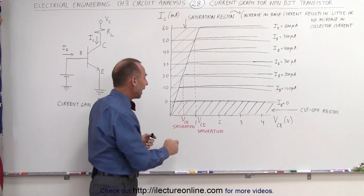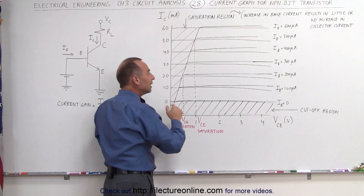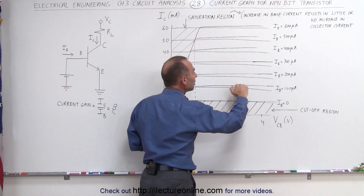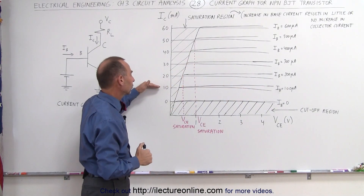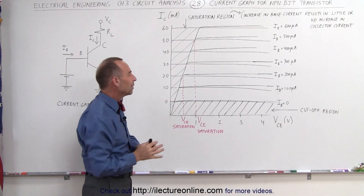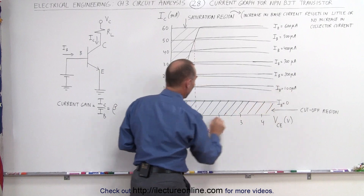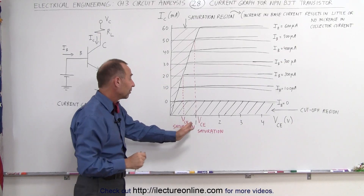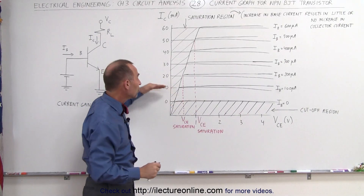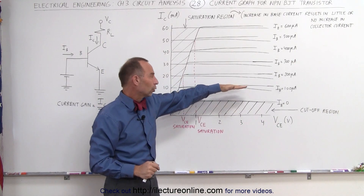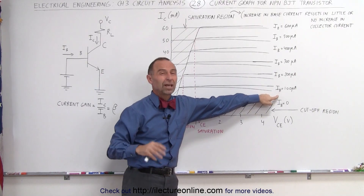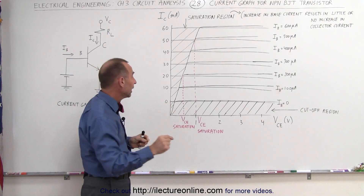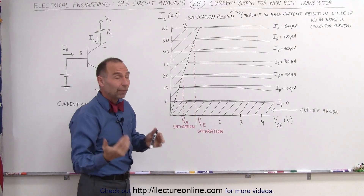Notice also that as you increase the voltage at the collector, you really don't get much more of an increase in the current. If you apply a certain base current and increase the collector voltage, you get a slight increase in collector current, but not a lot. By doubling or tripling the collector voltage, you get only a very slight increase in collector current, even keeping the base current the same. This means there's a very linear relationship between base current and collector current, even when the collector voltage varies considerably.